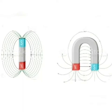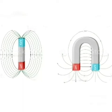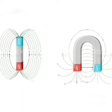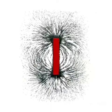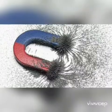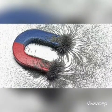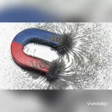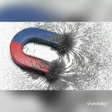Magnetic field has a fixed pattern. A magnetic field is strongest at the poles of the magnet. Magnet kee donoh poles mein magnetic field sabse zyada strong rehta hai.